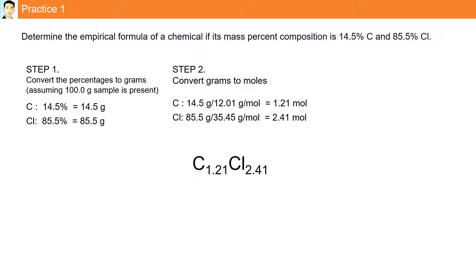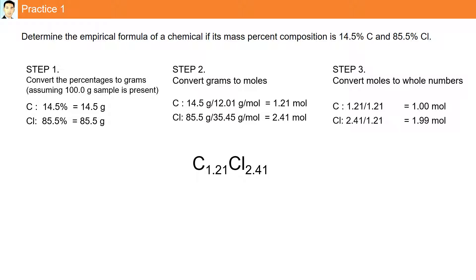We need to get rid of the decimals by converting moles to whole numbers. Carbon: 1.21 divided by 1.21 is 1 mole. Chlorine: 2.41 divided by 1.21 is 1.99 moles. Rounding, we have CCl2 — the empirical formula for a chemical containing 14.5% carbon and 85.5% chlorine.